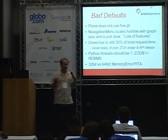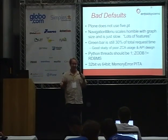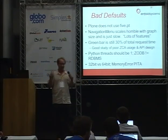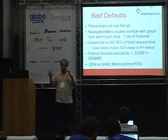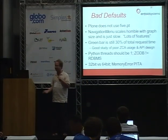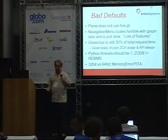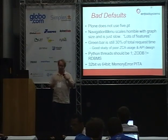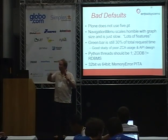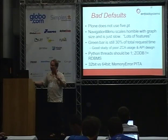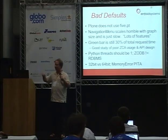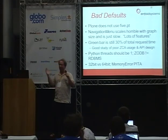Some of the bad defaults that will prevent scaling in Plone: well, not using five.pt. The navigation menu scales horribly — it actually gets worse as your content graph gets bigger. It's just slow.